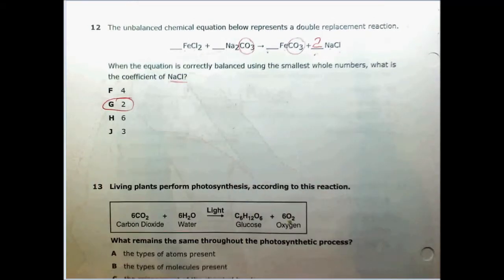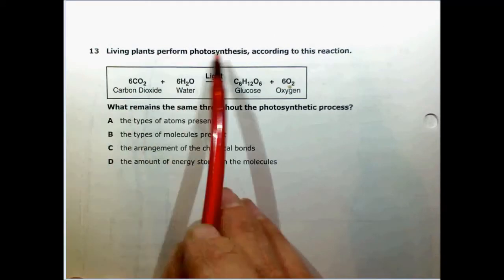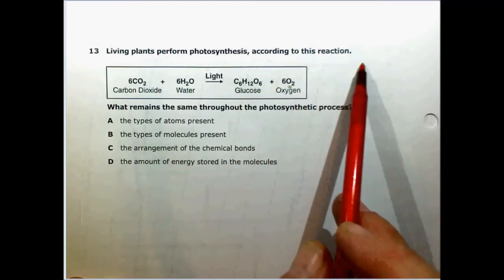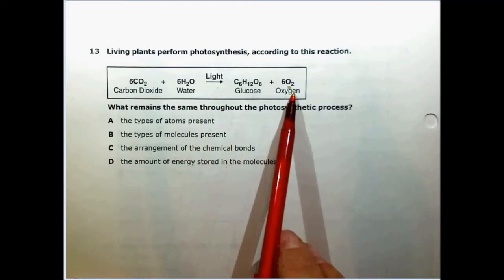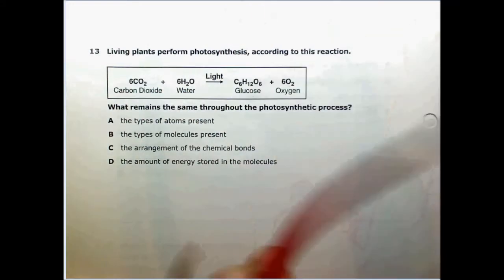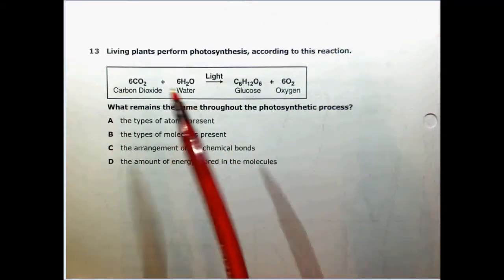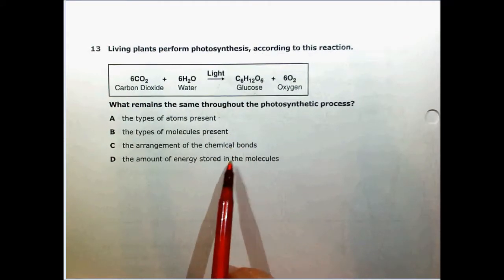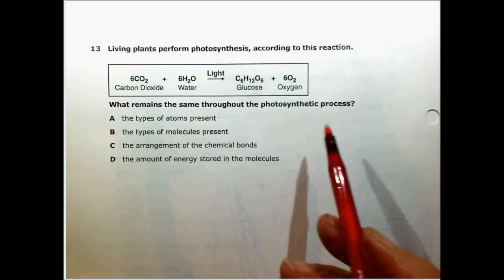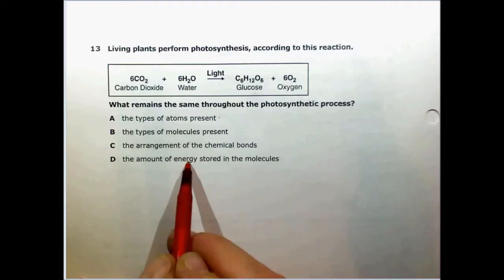Number 13 says living plants perform photosynthesis according to this reaction: carbon dioxide plus water in the presence of light yields glucose and oxygen. What remains the same throughout the photosynthetic process? The types of atoms, types of molecules, the arrangement of chemical bonds, and the amount of energy stored in the molecules. This is actually sixth grade or seventh grade. The energy that's stored in the molecules can't be the same—we know that glucose is an energy molecule.